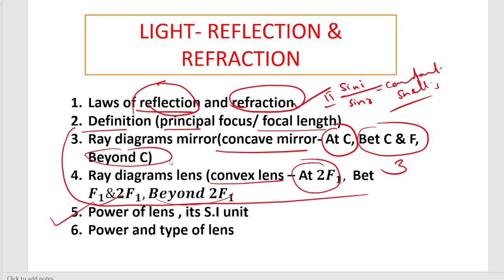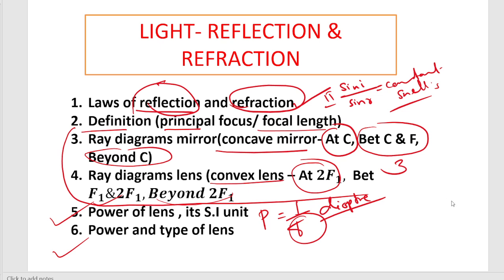For one mark, the power of lens may be asked. Power of lens is P = 1/f, meaning the reciprocal of focal length. The SI unit is Diopter. Note that power relates to light, not electricity. One Diopter means the focal length is 1 meter. Also, given power, identifying the type of lens may be asked - if power is positive, it is a convex lens; if power is negative, it is a concave lens.